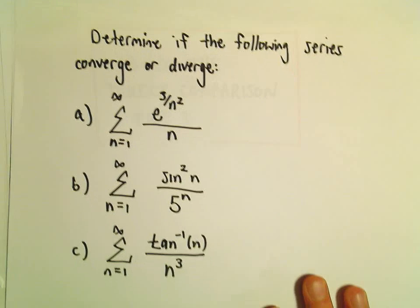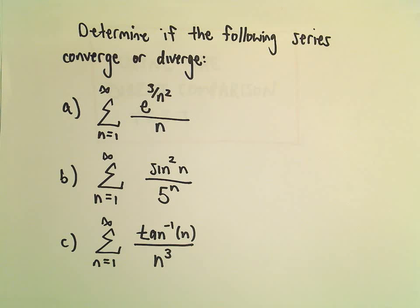All right, here we're going to start looking at some examples using the direct comparison test. So in part A here, we have the series from 1 to infinity of e to the 3 over n squared, all divided by n.